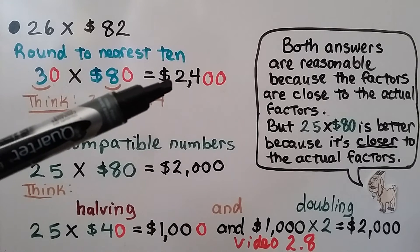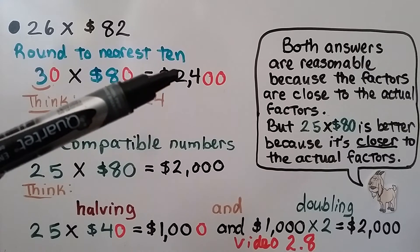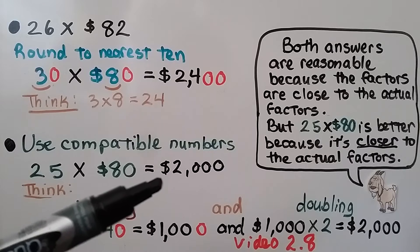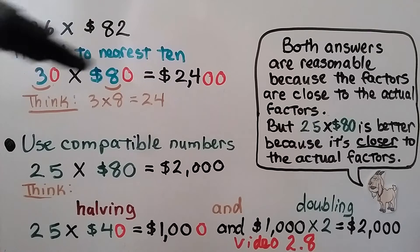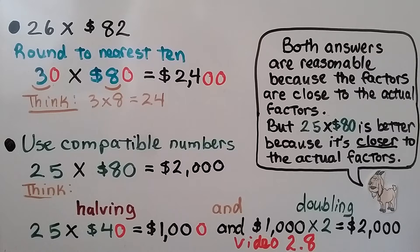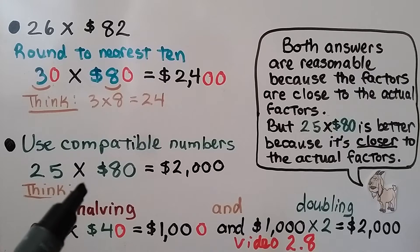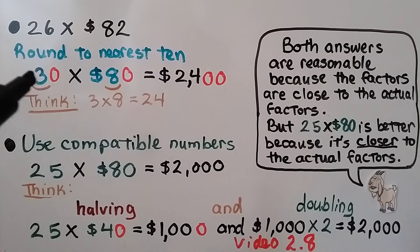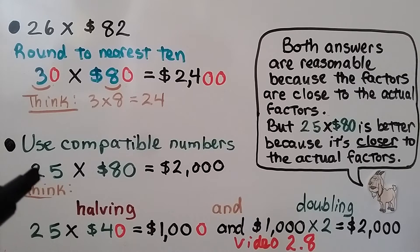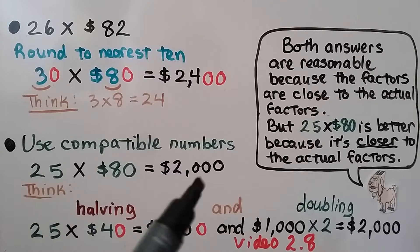We got $2,400 when rounding to the nearest ten and $2,000 using compatible numbers. Both are reasonable estimates because the factors are close to the actual factors. However, 25×$80 is a better estimate because the factors are closer to the actual values — 26 and 25 differ by only 1, whereas 26 and 30 differ by 4. Closer factors produce an estimate closer to the exact answer.